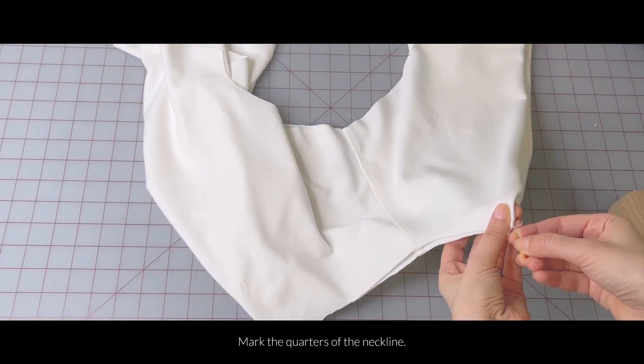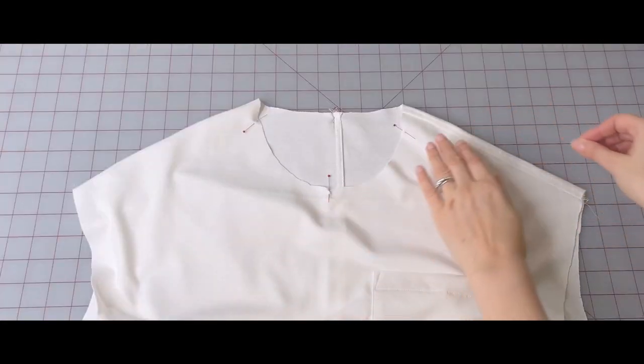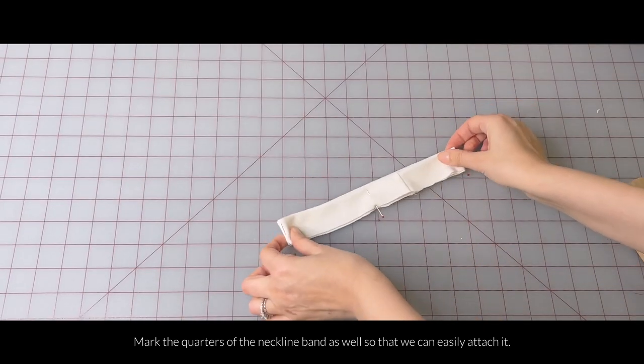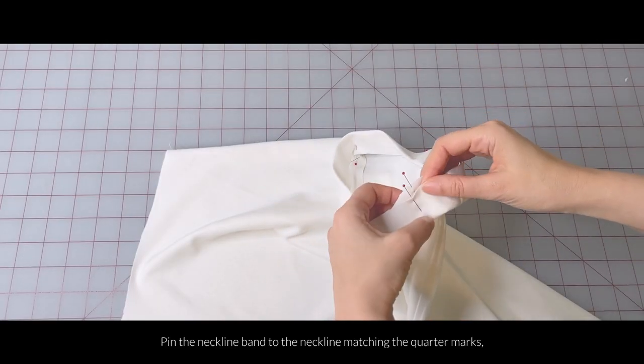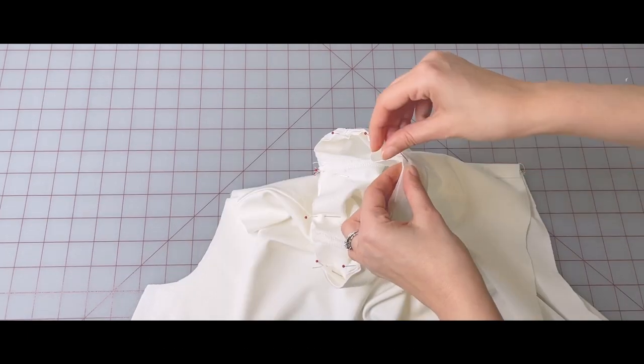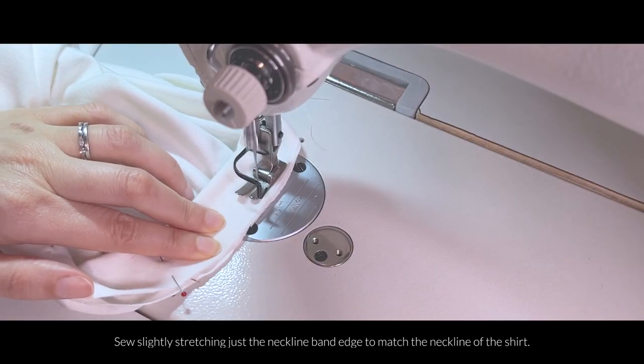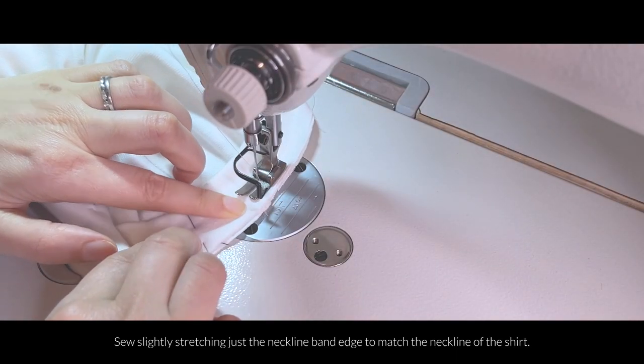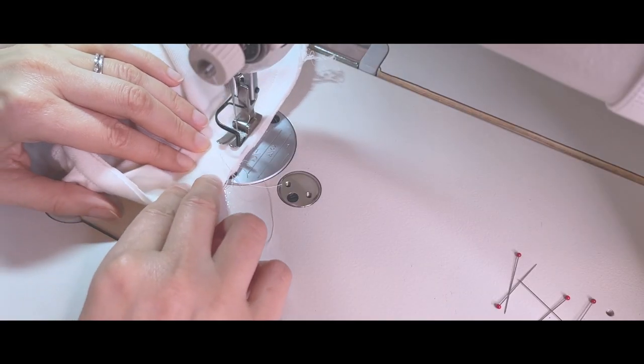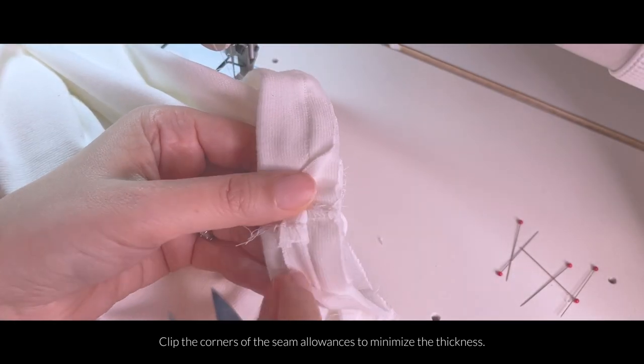Mark the quarters of the neckline. Then mark the quarters of the neckline band as well so we can easily attach it together. Pin the neckline band to the neckline matching the quarter marks we just made and then pin in between. Sew slightly stretching just the neckline band edge to match the neckline of the shirt.